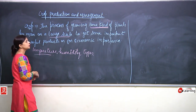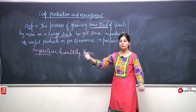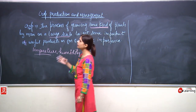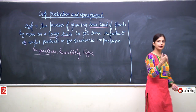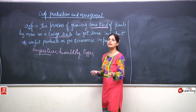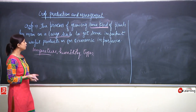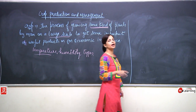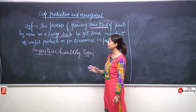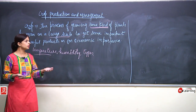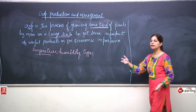Crops can be further divided into many types — on the basis of temperature, humidity. Whatever condition is comfortable for one plant is not necessarily comfortable for every plant. The best condition for one plant may not suit the growth of another plant. On the basis of this, we can divide crops into many categories.